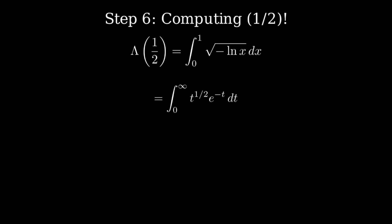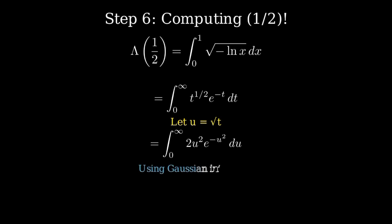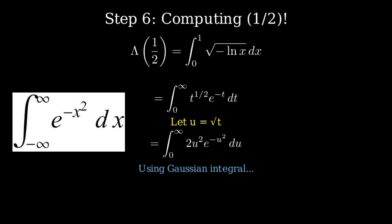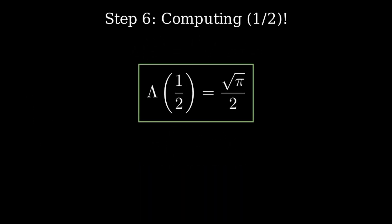Now let me make another substitution: let u = √t, then t = u² and dt = 2u du. This gives us ∫₀^∞ 2u² · e^(-u²) du. Integrals of this form involving e^(-u²) are called Gaussian integrals, and they have well-known solutions. When we evaluate this using Gaussian integral techniques, we get λ(1/2) = √π / 2. Therefore, 1/2 factorial equals √π / 2.